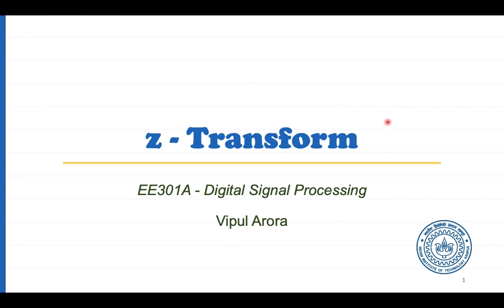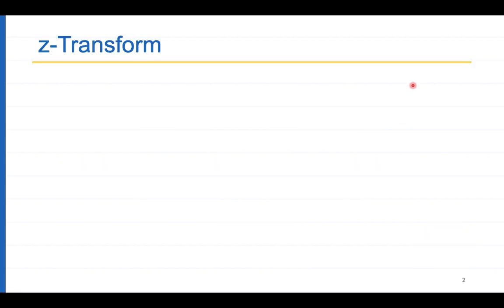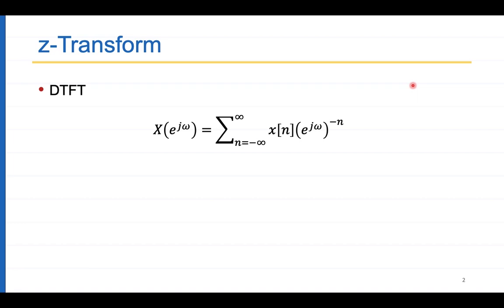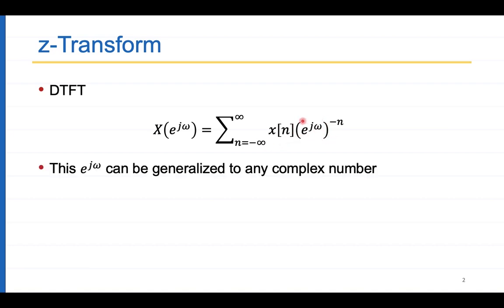Welcome to this video on Z-transforms. The discrete time Fourier transform (DTFT) of a sequence x[n] is the sum of x[n] times e to the power minus j omega n over all n. This can be written slightly differently: e to the power j omega is a complex number with unit magnitude, with angle from 0 to 2 pi, lying on the unit circle in the complex plane. This can be generalized to any complex number — and that is called a Z-transform.